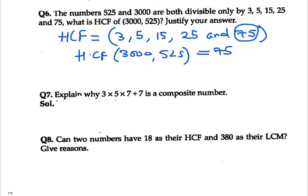If you want to verify, you can even verify by taking prime factors of 525 and 3000 or by Euclid's division method. You must remember out of the highest common factors we need to take the highest number which divides both numbers, so that is 75. That's the answer for question number 6.